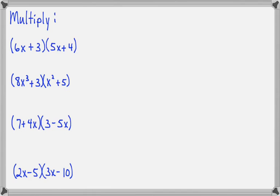Let's multiply these four together. In our first example, we have 6X plus 3 times 5X plus 4. So clearly this is two terms times two terms, and we can use the FOIL method on it. So first times first is 6X times 5X, which is 30X to the second. Outer times outer is 6X times 4, which is 24X.